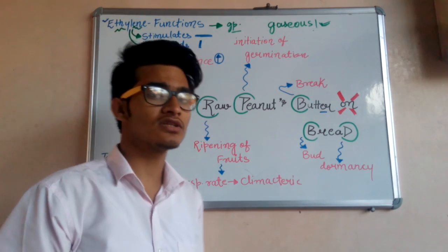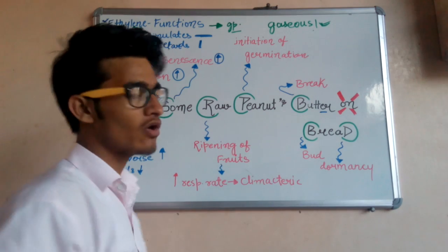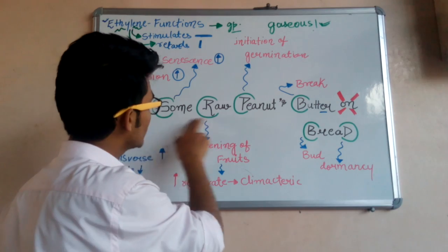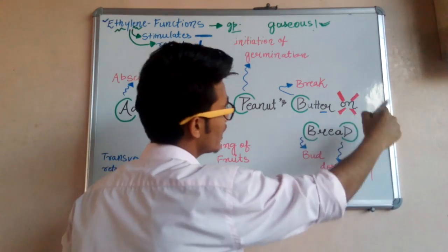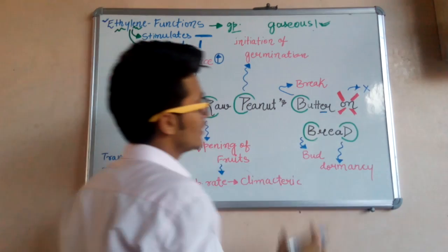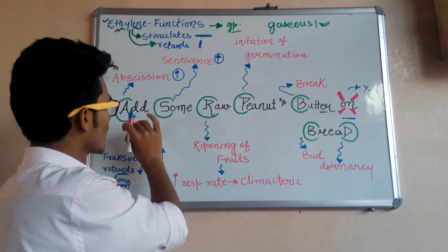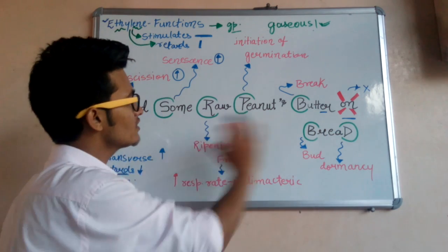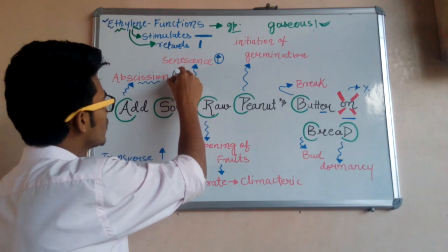We can understand all those functions via a very simple trick, and the trick is: 'Add some raw peanut butter on bread.' This is a very simple English sentence. So, 'Add' simply means abscission, which is promoted by ethylene.